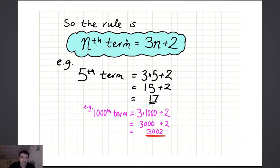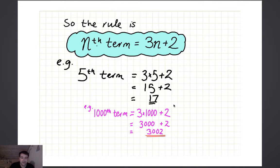So the rule is that the nth term is 3n plus 2. For example, the 5th term would be 3 times 5 plus 2, which is 15 plus 2, which is 17. That's useful because we can now work out the 1,000th term: 3 times 1,000 plus 2 — 3n plus 2 — which works out to be 3,002.